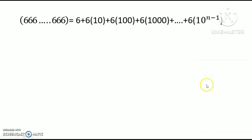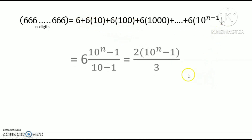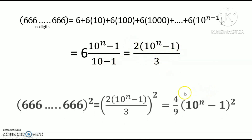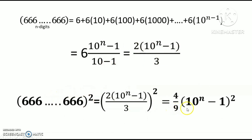So 666...6 up to n digits can be written as 6 into (10 to the power n minus 1) divided by 9, which equals (2/3) times (10 to the power n minus 1) divided by 3. So 666...6 whole square is equal to (4/9) times (10 to the power n minus 1) whole square, using the GP formula.